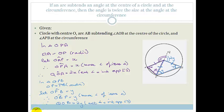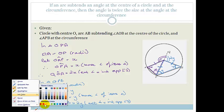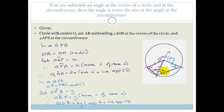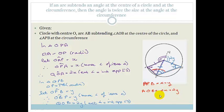Now looking at the full picture: AOB equals 2X plus 2Y, which is 2 times X plus Y, which is 2 times APB. Therefore the angle at the center is twice the angle at the circumference.